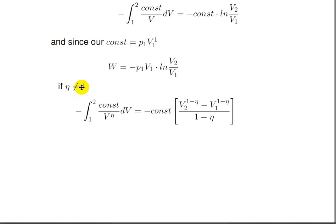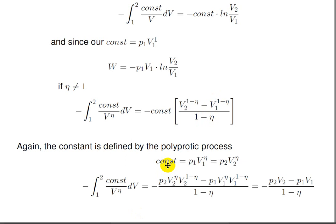A slightly more interesting case is if eta is not equal to 1. Here, we get the integral from state 1 to state 2 as the constant over V to the power of eta dV. That integrates as minus the constant times V2 to 1 minus eta minus V1 to the power of 1 minus eta over 1 minus eta. That's the inverse power rule. Again, the constant is defined by the polytropic process. So we have a constant is P1 times V1 to the power of eta, which is also equal to P2 times V2 to the power of eta. Now when we integrate using the inverse power rule and plugging in the constant term, we get the expression shown where 1 over V to the power of eta integrates as V to the power of minus eta, and becomes V to the power of 1 minus eta. Minus eta plus 1, 1 minus eta. What's the difference?